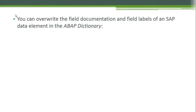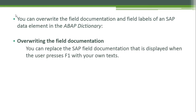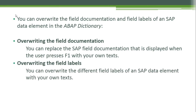You can overwrite the field documentation and field labels of a SAP data element in the ABAP dictionary. Overriding the field documentation means you can replace the SAP field documentation displayed when the user presses F1 with your own text. You can also overwrite the different field labels of a SAP data element with your own text. Let's take a look at another example of how to overwrite field labels in SAP.